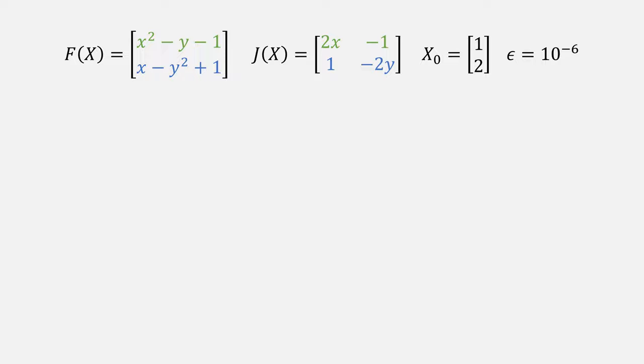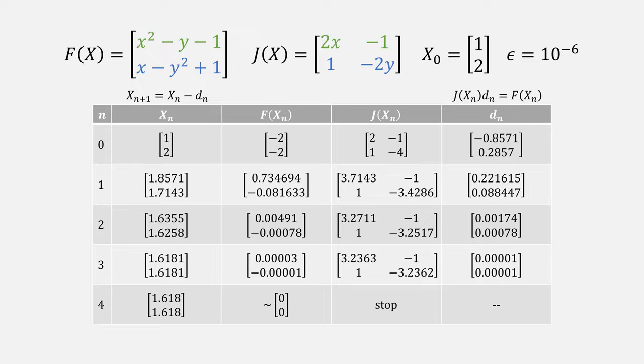Let's look at a numerical example using our same function and Jacobian, but starting from point 1, 2, and ending with an epsilon of 10 to the minus 6. We'll need x, F at that point, J at that point, and d, using this equation for x, and this equation for d. It converges to a solution in about four iterations.